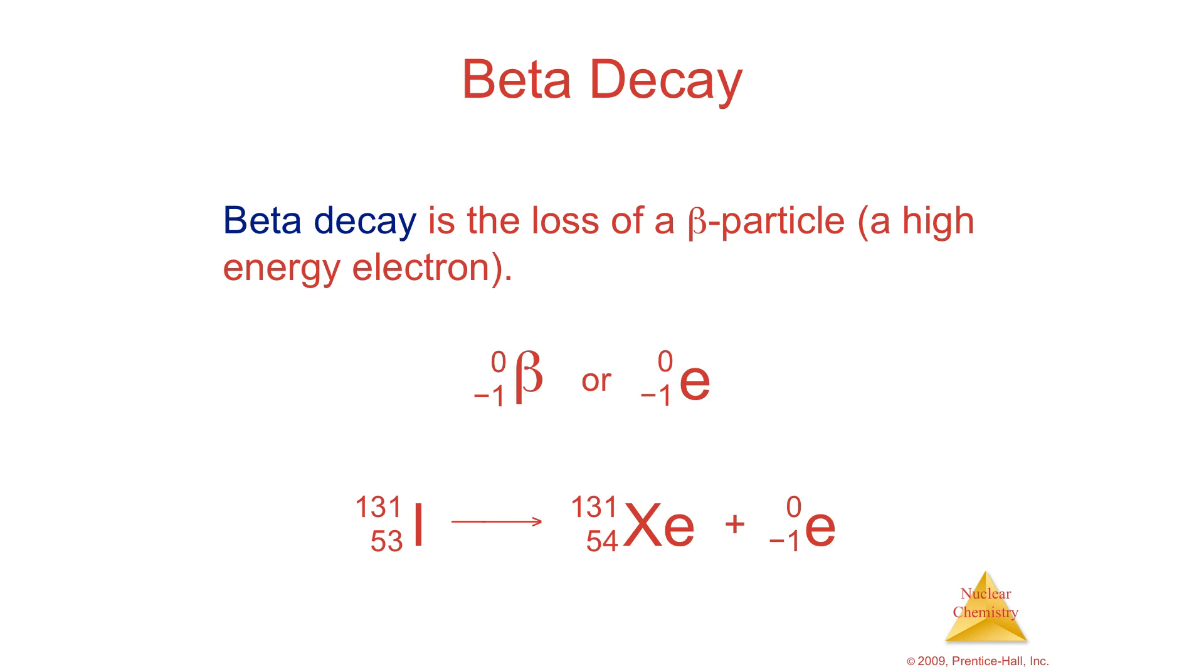Now I want you to see this math. By the way, whenever you do a nuclear equation, all of the neutrons will all equal zero, or all equal each other, both sides will equal, and all of the protons will also equal each other.